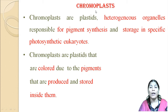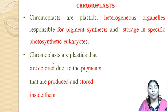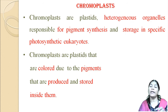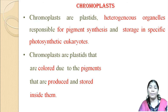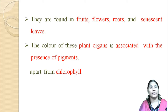First, we learn about chromoplasts. Chromoplasts are plastids which are heterogeneous organisms, responsible for pigment synthesis and storage in photosynthetic eukaryotes. These chromoplasts are colorful due to the presence of different colorful pigments. They produce color pigments and also store them inside the cell itself, and that's why their appearance is very colorful.